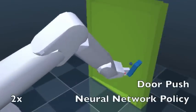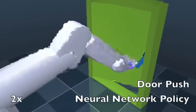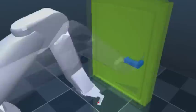However, for the door tasks, neural network policies were able to achieve 100% success, while the linear policies were not.